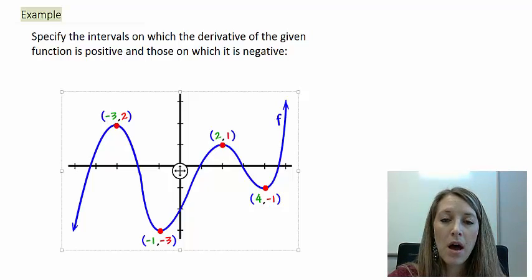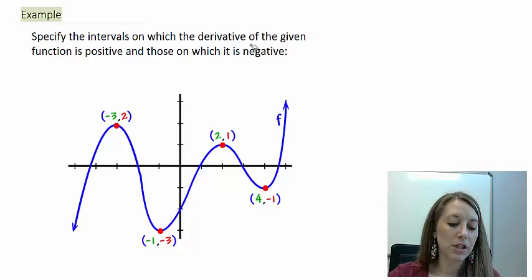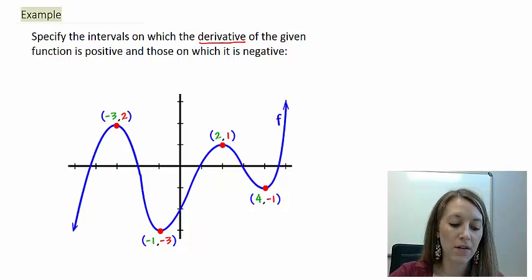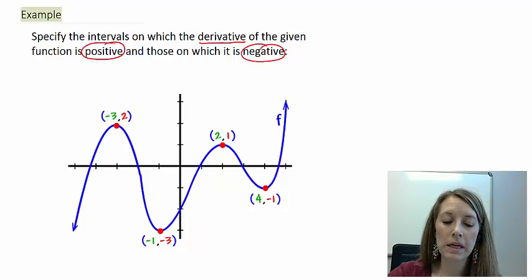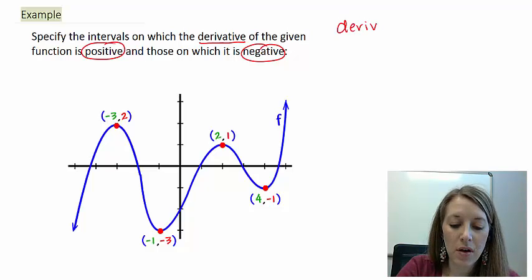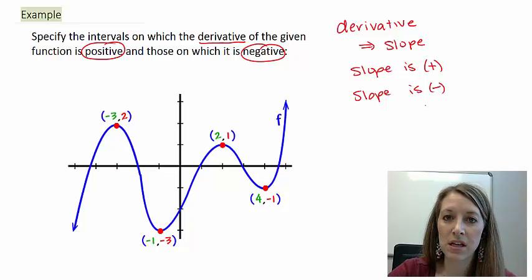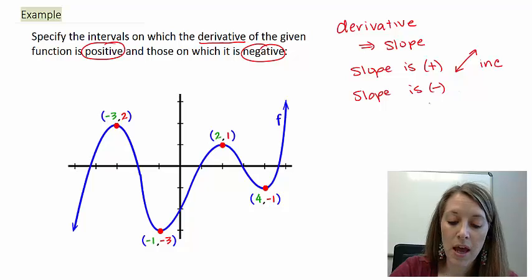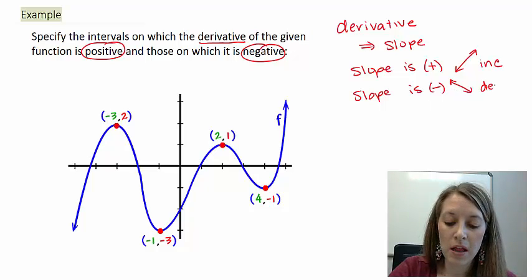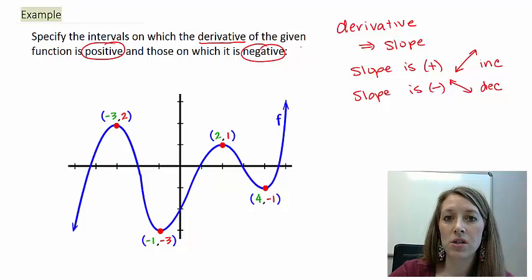Here's another similar example, except the wording has changed. This one asks you to specify the intervals on which the derivative of the given function is positive, and where it is negative. Remember the derivative gives us the slope, so this is basically asking for when the slope is positive — meaning the line is going up from left to right, hence increasing — and when the slope is negative — meaning the line is going down from left to right, hence decreasing. It's the same task, just in different language.